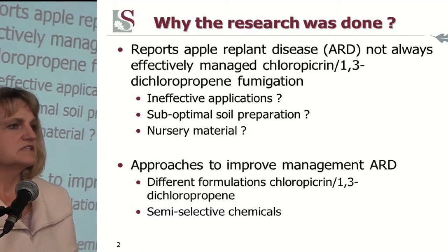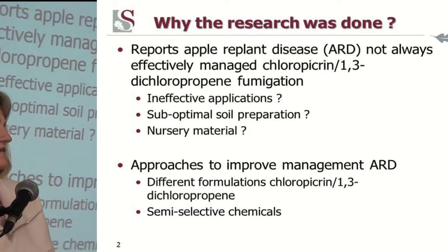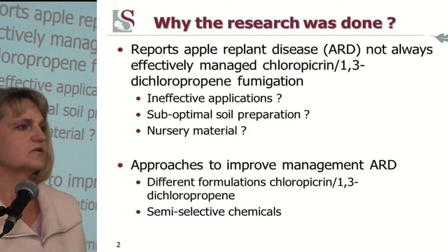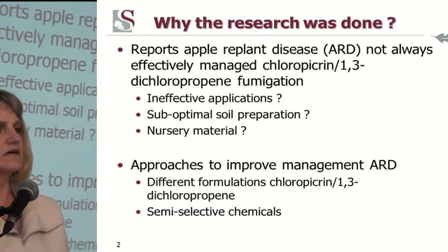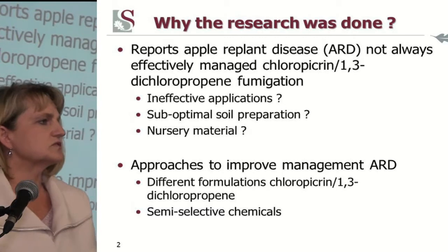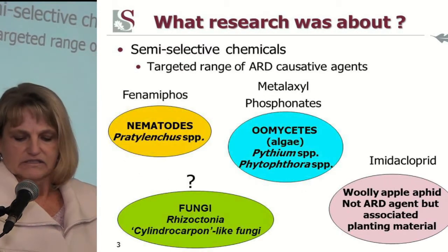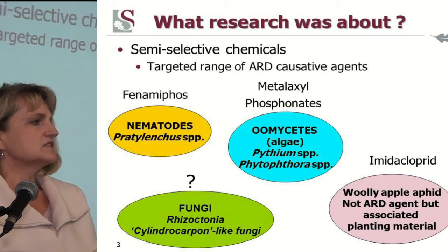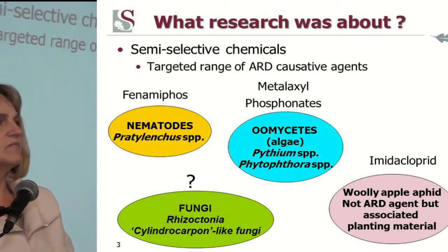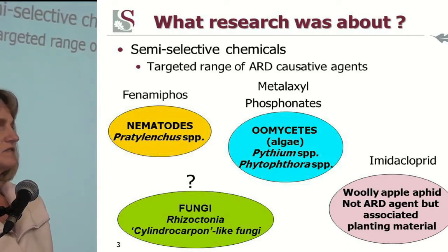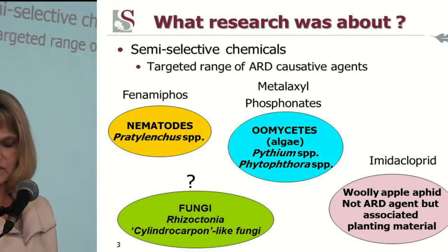The approaches that we looked at for improving fumigation were different formulations of the dichloropicrin formulations, and then also the use of semi-selective chemicals. What these semi-selective chemicals are — remembering that ARD is caused by a bunch of organisms — we selected chemicals that targeted the different groups.